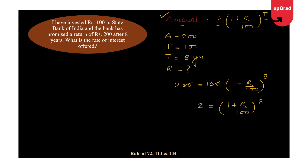Now I am stuck — because remember, you do not have calculators in aptitude examinations. To solve for 2 raised to the power 1/8, I have no easy way. This is where the question becomes difficult and students either leave it or guess from the options. This is exactly where the rule of 72, 114, and 144 will help us solve such questions in a quick go.